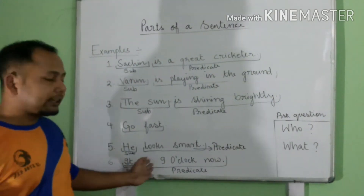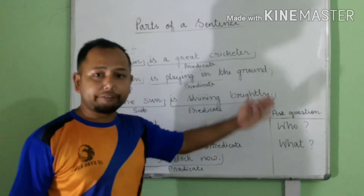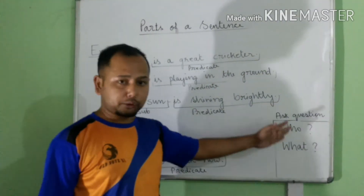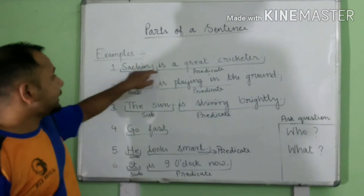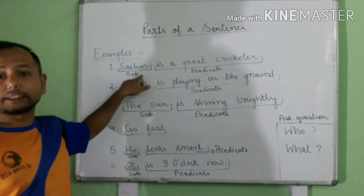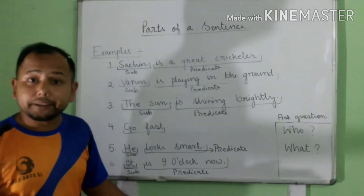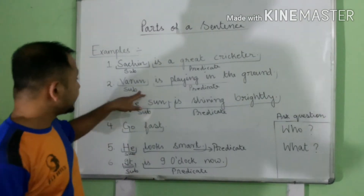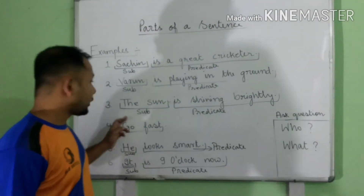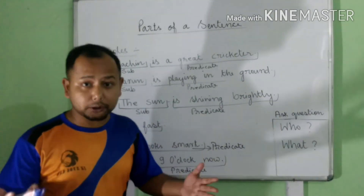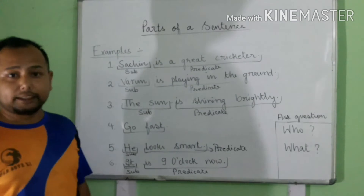To identify the subject, we can ask the question who or what. Sachin is a great cricketer — who is the great cricketer? Sachin. Varun is playing in the ground — who is playing? Varun. The sun is shining brightly — what is shining? The sun. So the sun is the subject.